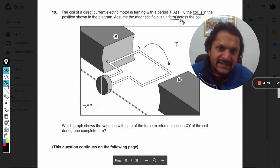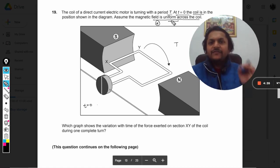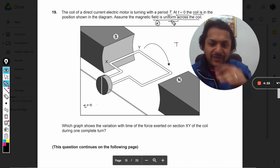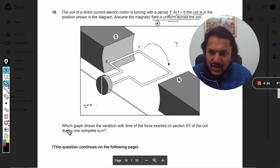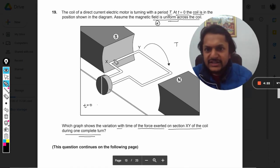So this position is t = 0. Assume the magnetic field is uniform across the coil. This is a very important condition - please note the magnetic field is to be taken uniform everywhere on all points on the coil. Which graph shows the variation with time of the force exerted on section XY of the coil during one complete term?